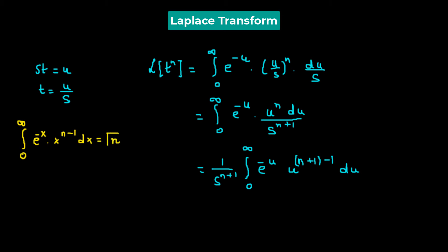Applying this definition, we get one over s^(n+1) times the gamma function of n plus 1. Since n is a natural number, the gamma function of n plus 1 equals n factorial.